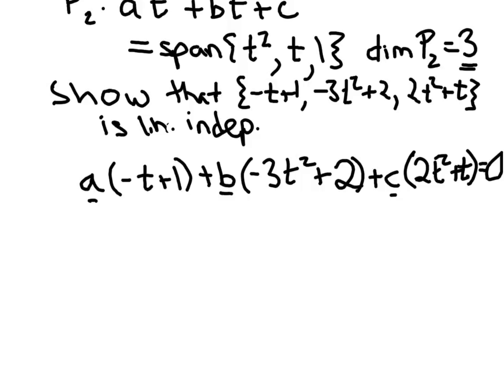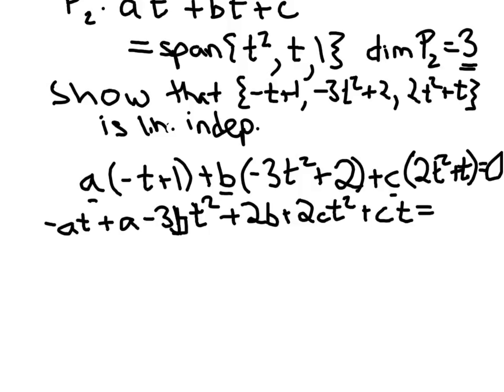So I'm going to start this out by multiplying everything out. So a times negative t, that's negative at, and then a times 1, so that's plus a. Now I distribute the b, so negative 3b t squared. Plus b times 2, so plus 2b, plus c times 2t squared, so 2ct squared, plus c times t is equal to 0.